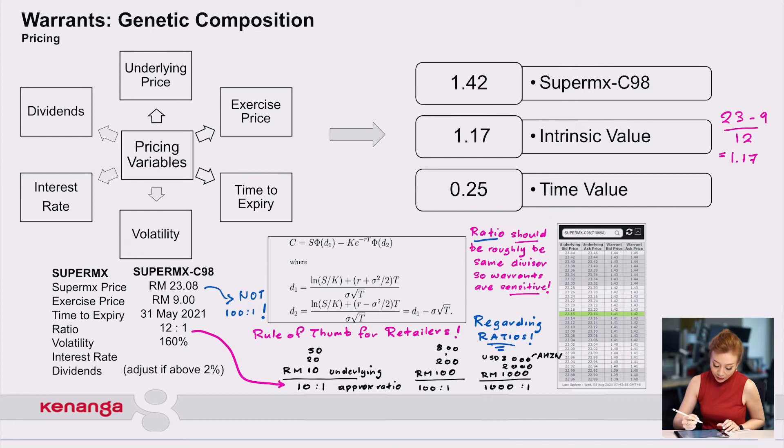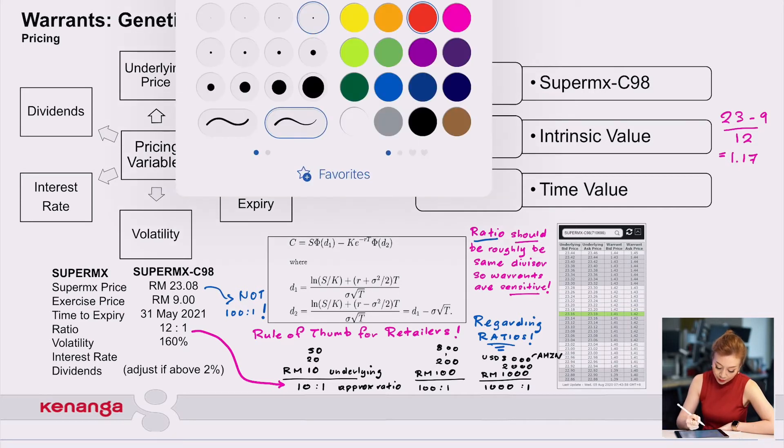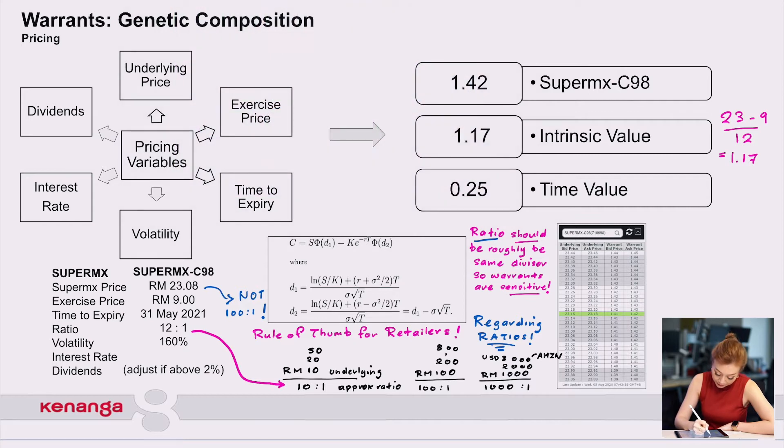So a warrant that you can see on the market will have things like Supermax C98, for example. The price of it will have Supermax price at $0.20, exercise price $0.09, time to expiry next year May 2021, ratio 12 to 1, volatility, and so on. These are all the things that make the ingredients of a structured warrant.